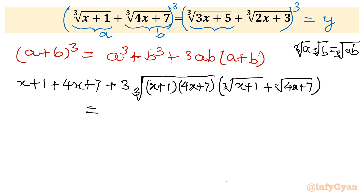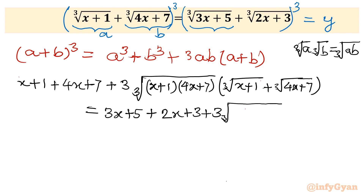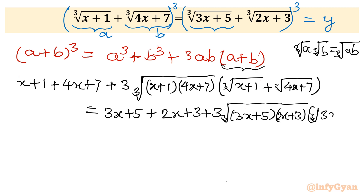On the right-hand side, a³ gives (3x+5) and b³ gives (2x+3). Then plus 3ab: I club the cube roots together as cube root of (3x+5)(2x+3). In the (a+b) bracket I write cube root(3x+5) plus cube root(2x+3), which we will write as y.